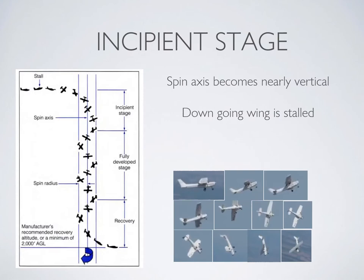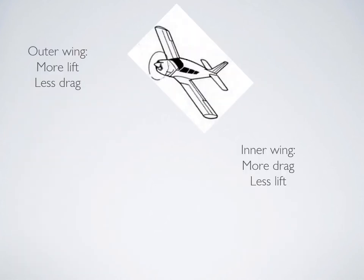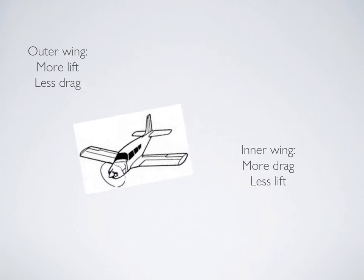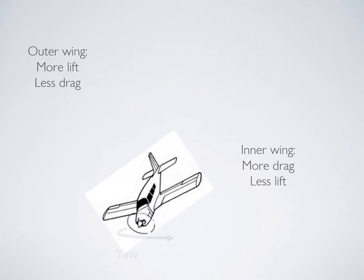The incipient stage of a spin occurs just after one or both wings are stalled. If one wing is stalled more than the other, the drag of that wing will intensify the aircraft's yaw towards the stalled wing, starting the spin. Because the outer wing is generating a slight amount of lift, it continues to spin the aircraft and prevents the lower wing from hitting the oncoming airflow at a lower angle of attack, keeping the lower wing stalled and locking the aircraft in a spin.